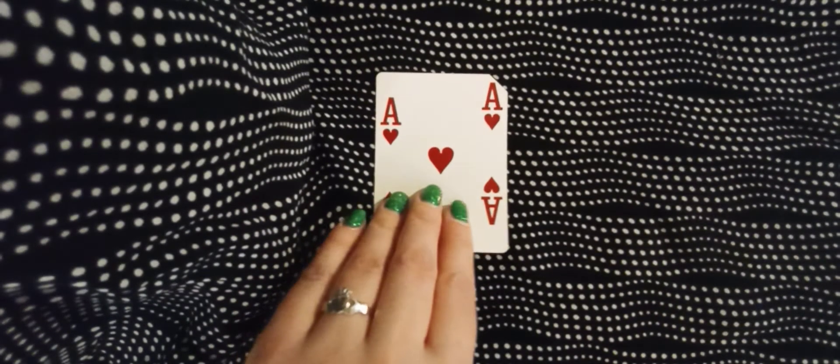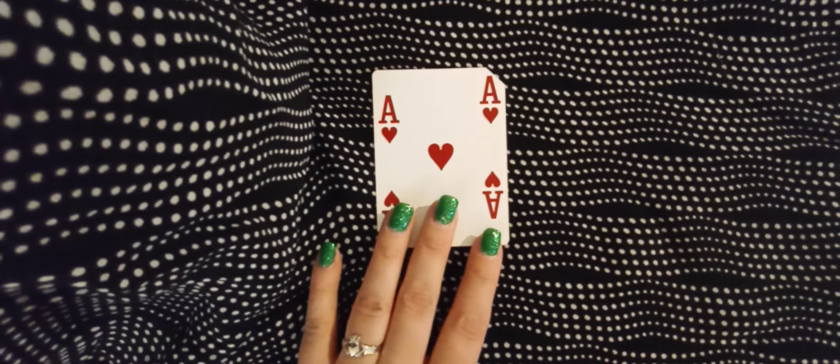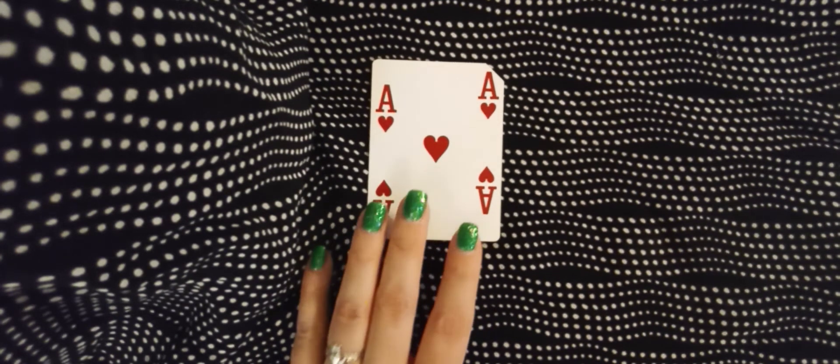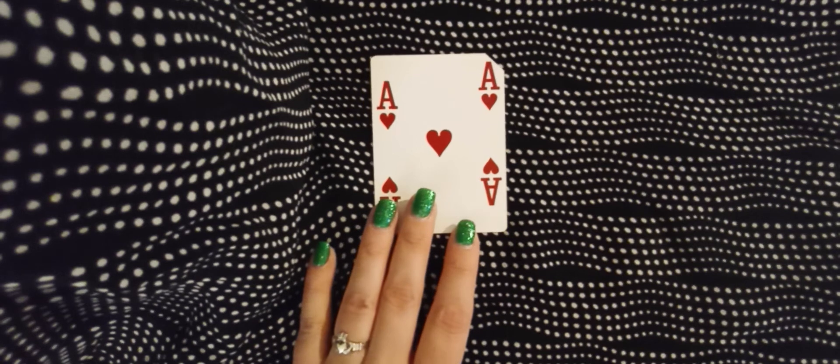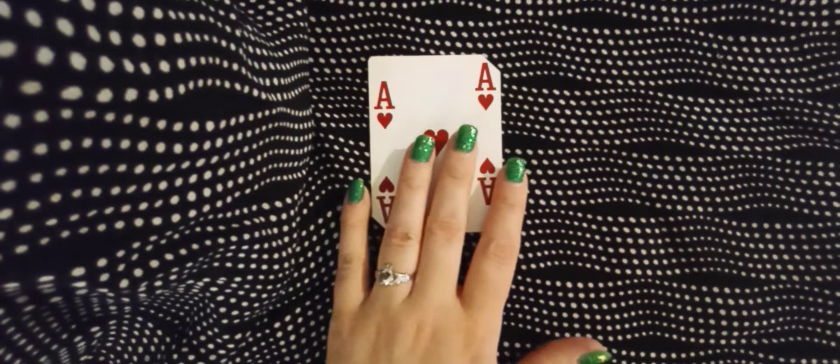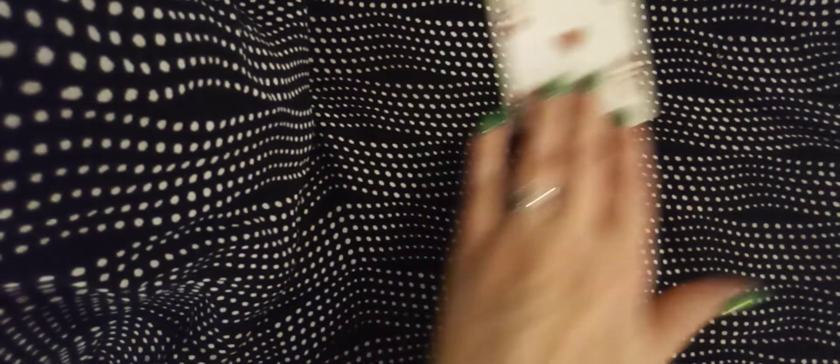The first card I'm going to pull is the Ace of Hearts. Ace of Hearts is about new beginnings such as a new relationship, good news for yourself, maybe somebody close to you has good news. It could mean a new marriage, things like that. So that's what the Ace of Hearts means.